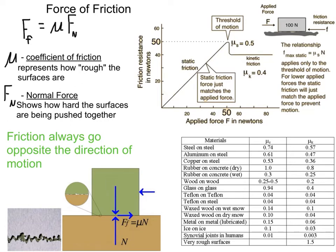The equation for friction: force of friction equals the coefficient of friction, mu, times the normal force. Normal force we talked about last time in free body diagrams. The coefficient of friction is an idea of how rough the surfaces are, and the reason that normal force is in this equation is it's a judge of how hard the surfaces are being pushed together.